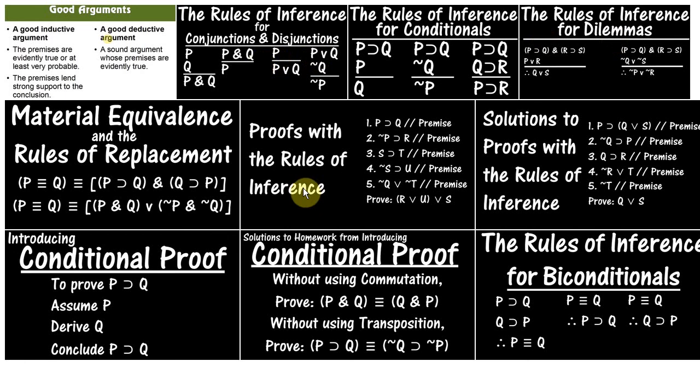Then we started doing proofs, first with the rules of inference, and we looked at some solutions to those. And then we moved on to conditional proof, where we were also using the rules of replacement. And conditional proof is a technique for proving a conditional by making an assumption, and then trying to show that that assumption leads to something, and that allows us to conclude if our original assumption, then what we derived.